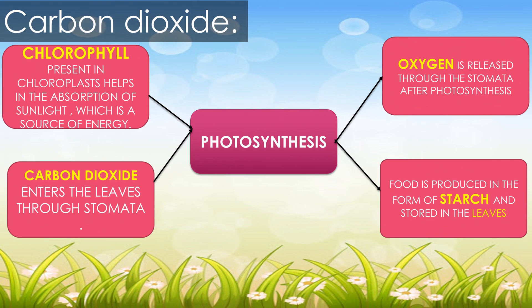Chlorophyll present in the chloroplast helps in the absorption of sunlight, which is a source of energy. Carbon dioxide enters the leaves through stomata. Oxygen is released through the stomata after photosynthesis. Food is produced in the form of starch and is stored in the leaves.